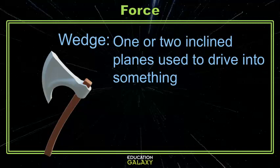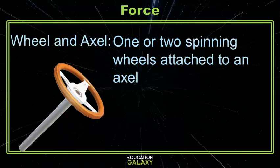Our last simple machine is a wheel and axle. You see wheel and axles all the time on cars and bicycles, but what it is is one bar attaching one or two wheels that allows them to spin — like a doorknob.